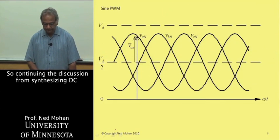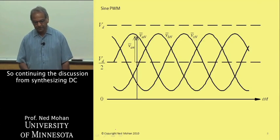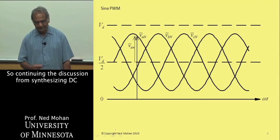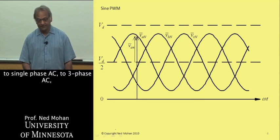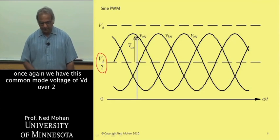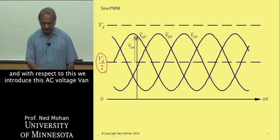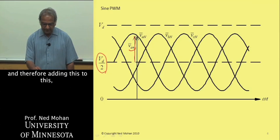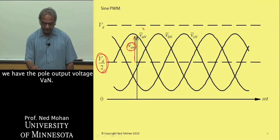Continuing the discussion from synthesizing DC to single-phase AC to three-phase AC. Once again, we have this common mode voltage of VD over 2. With respect to this, we introduce this AC voltage VAN. Therefore, adding this to this, we have the pole output voltage VAN.